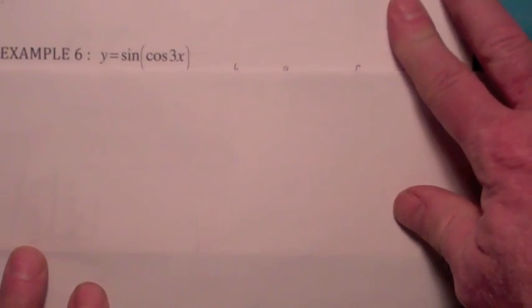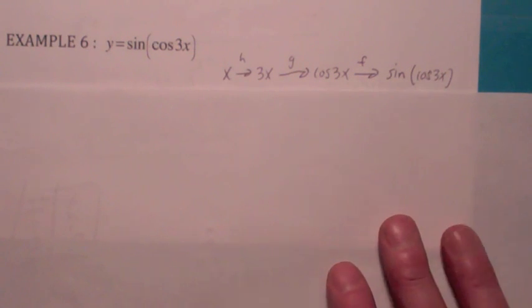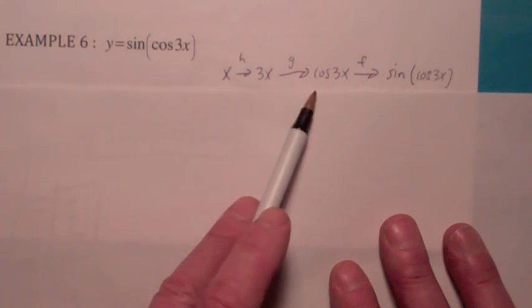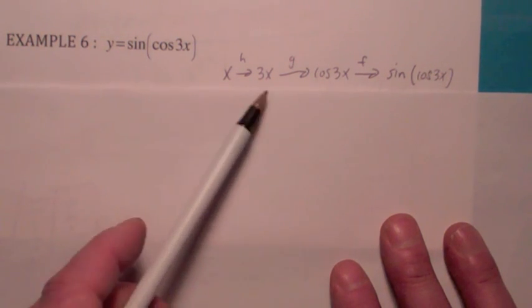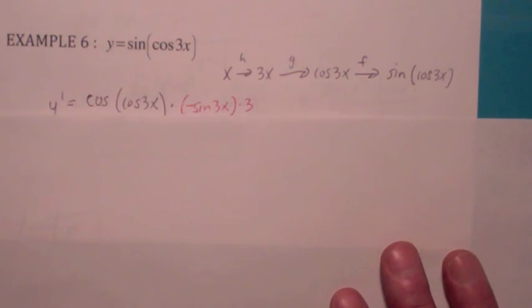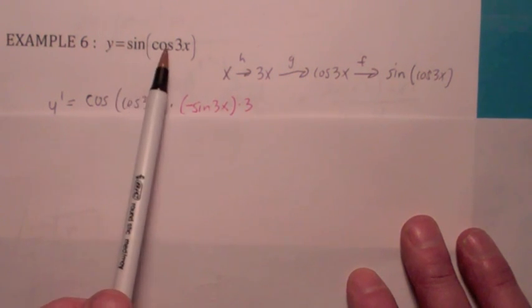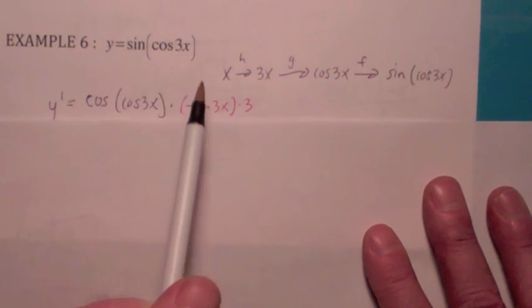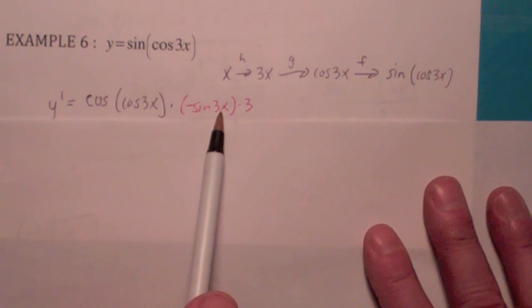This one is actually three functions. Starting with x, you first get three x, then you take the cosine of that, and the outside function is taking the sine of that. The outside function is the sine, so the chain rule gives you the cosine — keeping cosine of three x fixed — so it's the cosine of cosine three x. But then you take the derivative of the inside function cosine three x, and you have to use the chain rule on that too: you get negative sine three x, then pick up the derivative of what's inside that, which gives you three. So we use the chain rule once to get negative sine three x, and a second time to get the three. Moving the negative three in front gives the final answer.